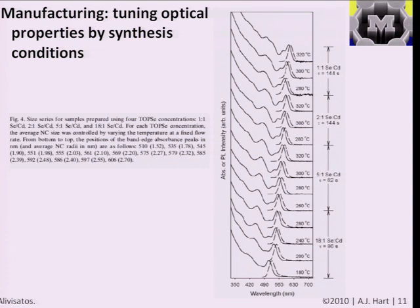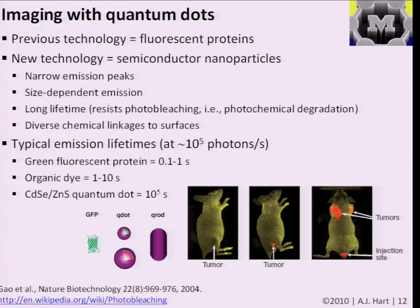We'll see later how the size distribution evolves with time. Controlling the synthesis process to give, for example, a peak average size at 5.4 versus 5.6 nanometers could, depending on the material, have a big difference in color and in imaging if you wanted to coat one size with one receptor and another size with another receptor to get a multicolor image. That leads to really one of the biggest applications of these materials: imaging, particularly for biomedical imaging.